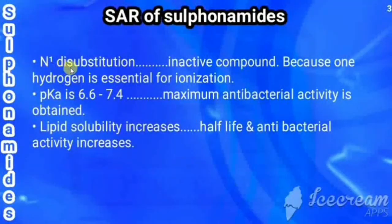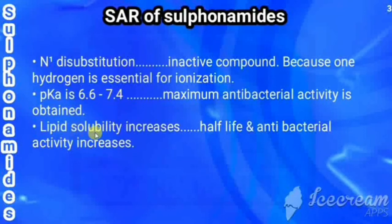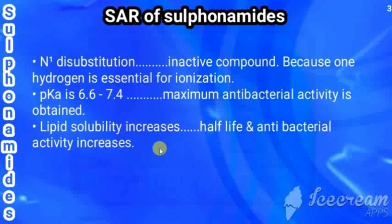Di-substitution at the N1 nitrogen gives an inactive compound, as one nitrogen is essential for ionization. To achieve maximum antibacterial activity, the pKa value should be between 6.6 and 7.4. Increasing lipid solubility increases both the half-life and antibacterial activity of the sulfonamide.